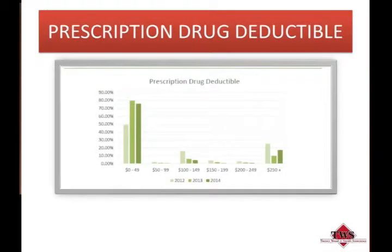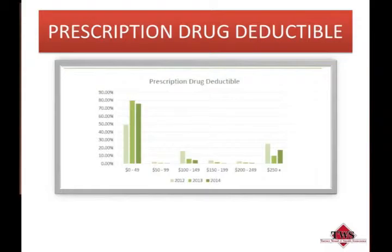Prescription drug deductibles are another cost-saving measure where employees must pay the deductible before drug copays are applicable. Over 75 percent of plans featured a prescription drug deductible in the zero to $49 range, and 17 percent of employers reported a drug deductible higher than $250. Other cost-saving strategies include requiring generic drugs when available and increasing the number of drug tiers. The median three-tier copays are $10 for generic, $35 for name brand, and $55 for non-formulary.